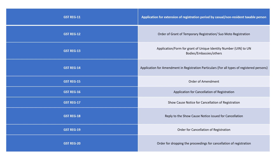GST REG-17 is the show cause notice for cancellation of registration, where the person must show cause for why their GST number is being cancelled. GST REG-18 is the reply to that show cause notice for cancellation. GST REG-19 is the formal order for cancellation of registration.